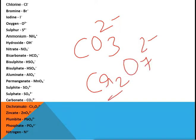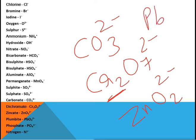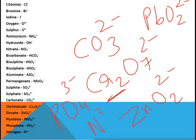Dichromate is Cr₂O₇²⁻ — 'di' means two chromium atoms. Zincate is ZnO₂²⁻, similar to aluminate. Plumbite is PbO₂²⁻. Phosphate is PO₄³⁻, which is also important. Finally, nitrogen occurs in the form N³⁻. These are the radicals and ions whose formulas you must remember.